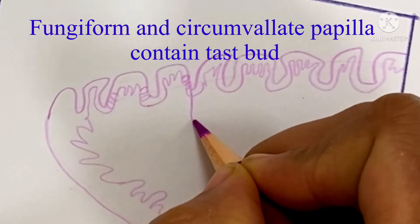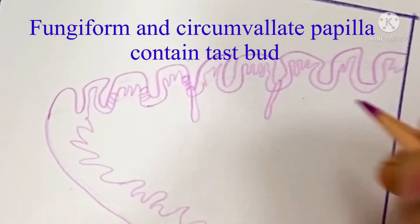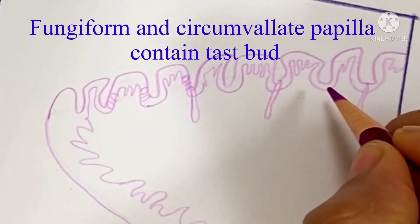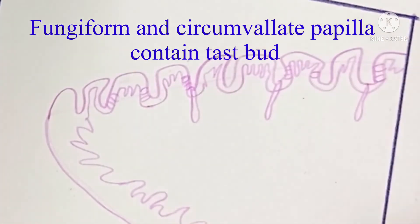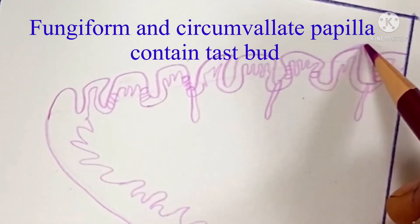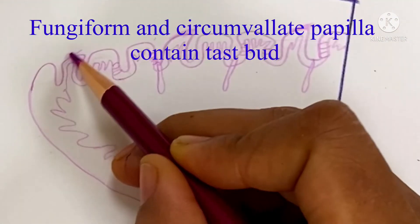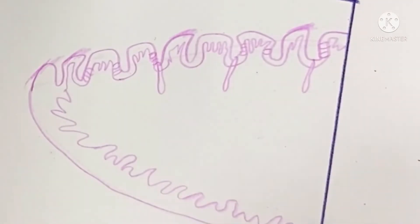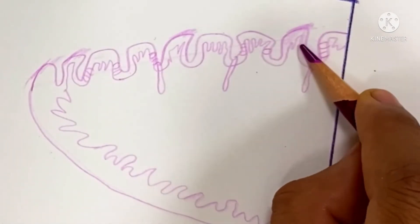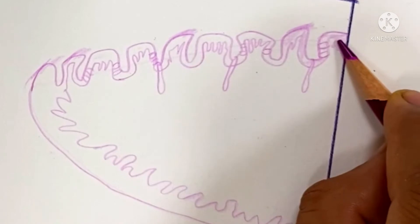Here we are drawing the taste bud and duct of the gland that pours the secretion in the groove around the papilla. Here is a filiform papilla which is partly keratinized. This is the dorsal surface of the tongue.